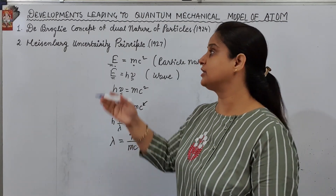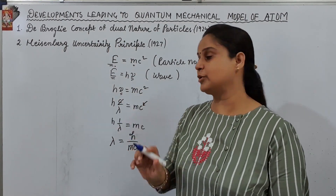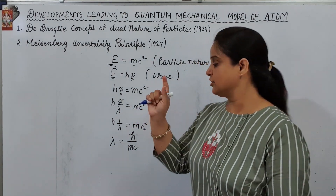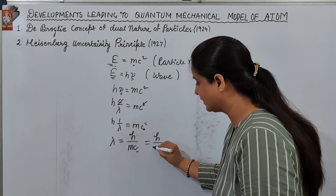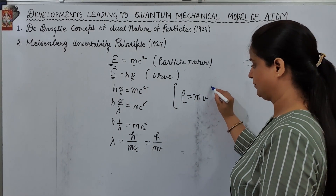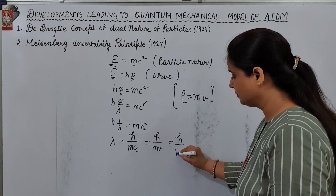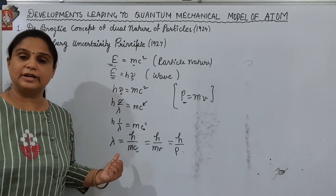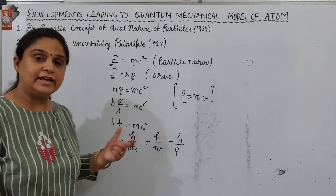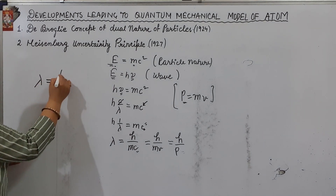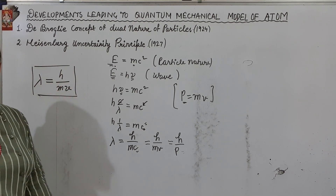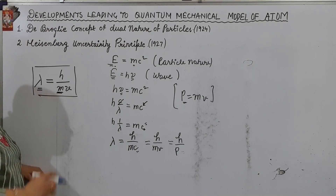Since de Broglie was talking about particles and not just light, the speed of light c can be replaced by the velocity v of that particle. So c becomes v, giving mv. We know that momentum p equals mv, so replacing mc with p, we get λ equals h upon p. This gives us the formula to relate the wavelength λ of a particle to its mass. According to de Broglie, every particle should consist of wave nature and particle nature, and we can relate it to the mass of the particle and lambda.